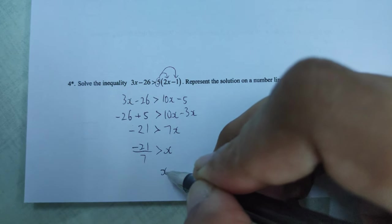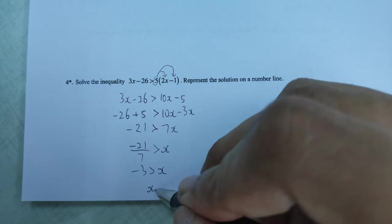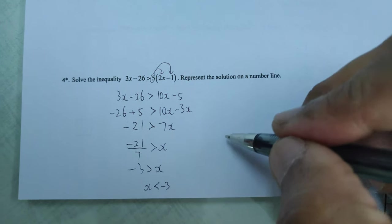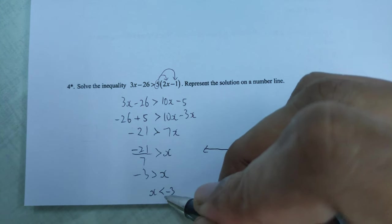Again, I'm going to divide by seven, which is positive, then I don't need to worry about changing the sign. Negative 21 divided by seven is negative three. Again, rearrange it back so that you can just simply copy the sign.